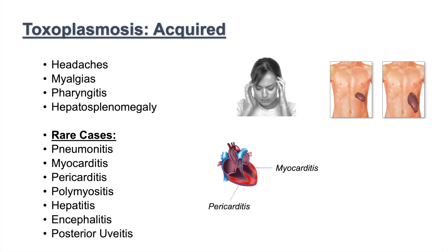Having said all of this, the majority of immunocompetent individuals are asymptomatic for toxoplasmosis, but in some individuals we can see some of these symptoms — especially in those with reactivation due to immunosuppression. So how do we diagnose and treat toxoplasmosis?